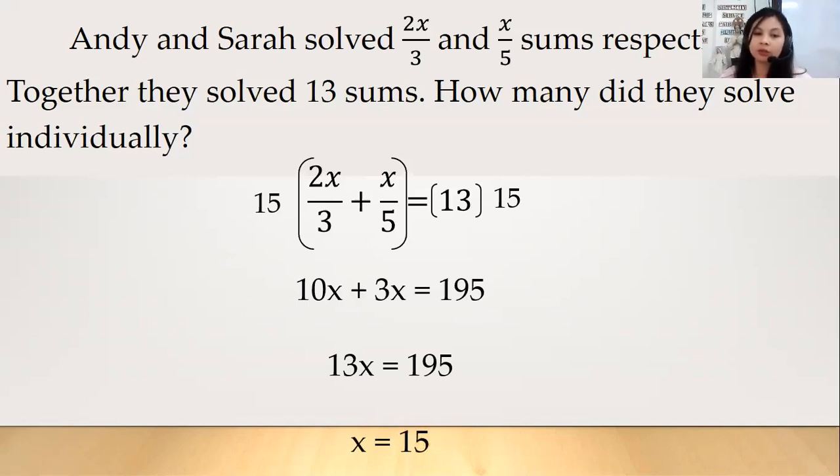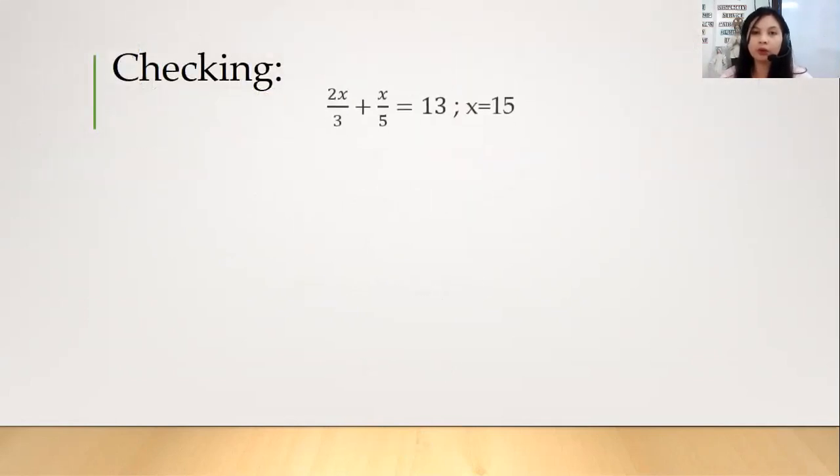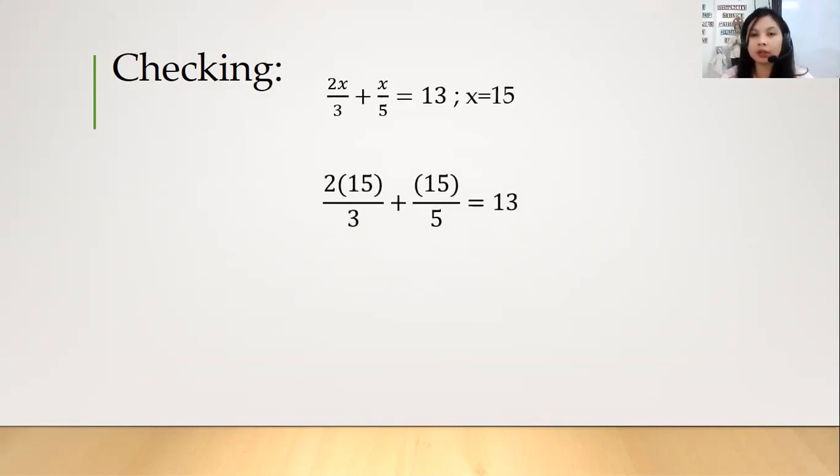And then paano natin mati-check kung tama yung ating answer? So let's just substitute our value of x to our given po. So we will have 2 times 15 divided by 3 or over 3 plus 15 over 5 equals 13. Okay, so simplify lang. 2 times 15 is 30. And then 30 divided by 3 po, pwede pa kasi siyang madivide, so 10 po. 15 divided by 5 naman is 3, and then equals to 13. So now 10 plus 3 is 13 po. So kapag po ganyan, kapag once nag-equal yung ating left and right side, ibig sabihin po, tama yung ating value of x which is 15 po.